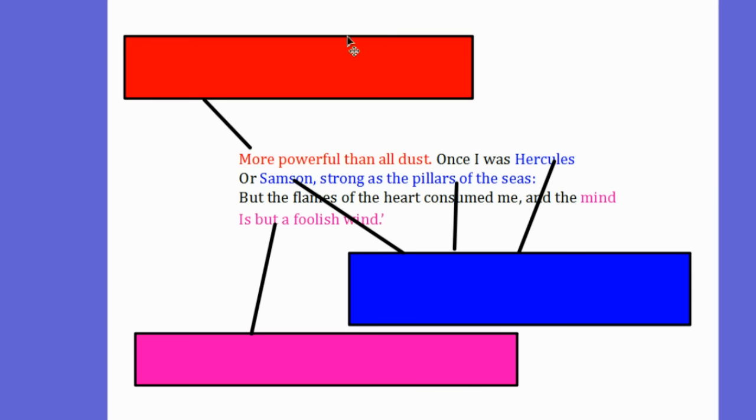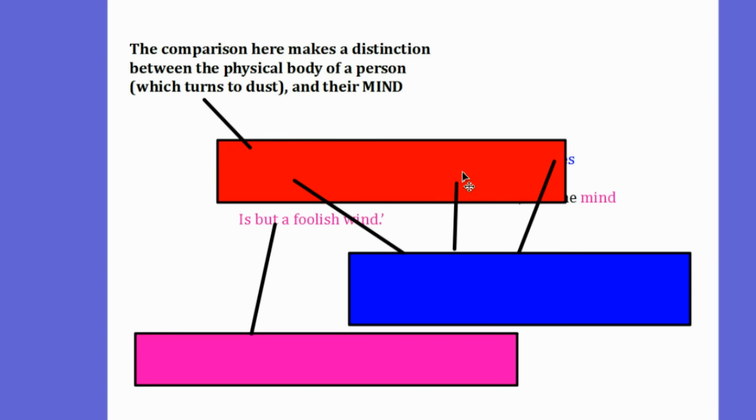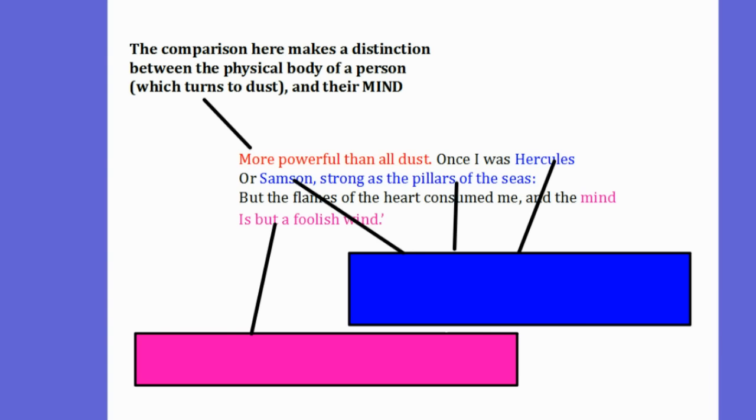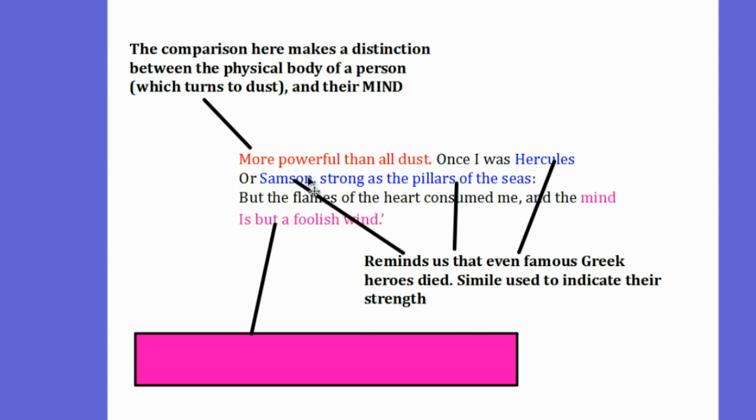The phrase more powerful than all dust is a comparison. And the comparison here makes a distinction between the physical body of a person, which turns to dust, and the mind. And the way that the writer refers to the physical body is by using exaggerated examples. We have Greek gods here. We have Hercules and Samson. And the poet reminds us that even famous Greek heroes died.